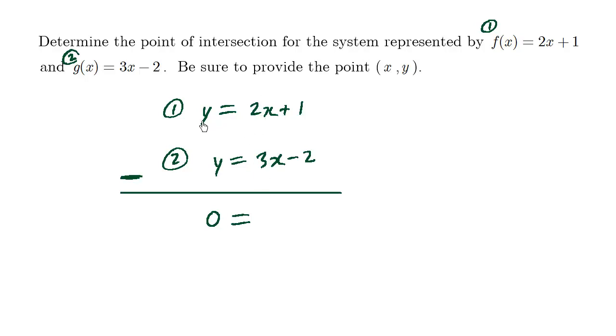As long as you're consistent with the way you do it. I don't want a negative x value, so I'm going to go bottom minus the top. 3x minus 2x is x, negative 2 minus 1 is going to be negative 3. So you can see here that x equals 3.